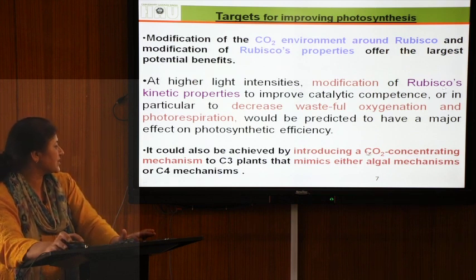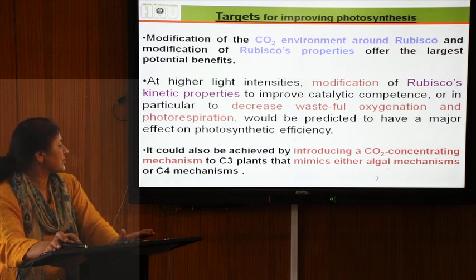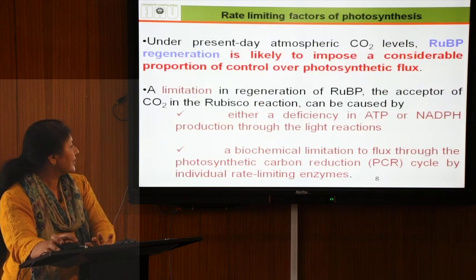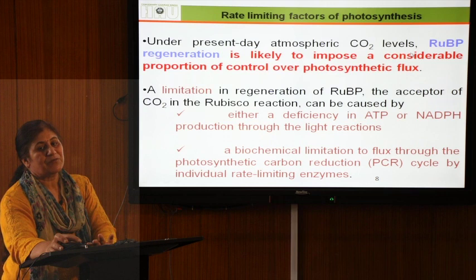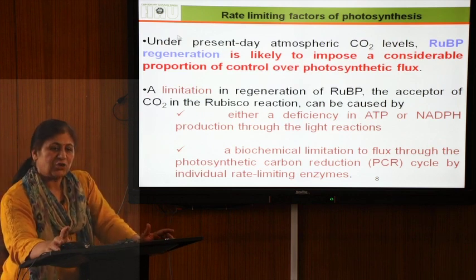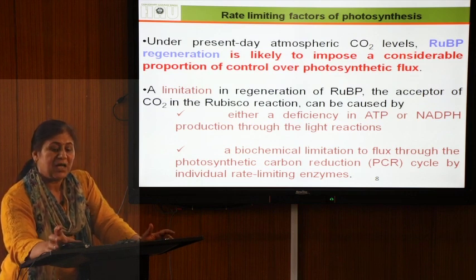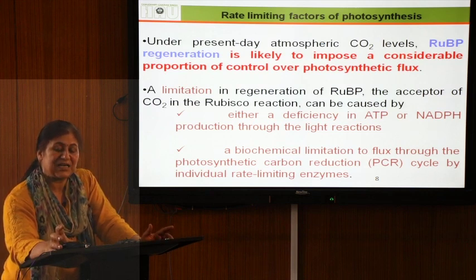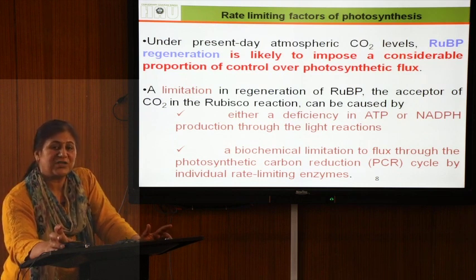Introducing a CCM would mimic either the algal mechanism or the C4 mechanism. Under present-day atmospheric CO2 levels of about 400 ppm (due to global warming), CO2 is sufficient in the environment. However, rubisco activity is still not as high as it should be, because high temperatures cause rubisco activity to decrease and enzymes to denature. Therefore, continuous RuBP regeneration is required.